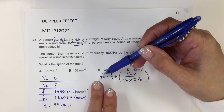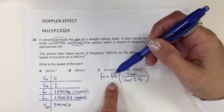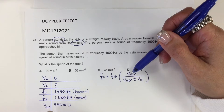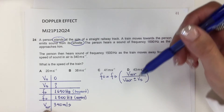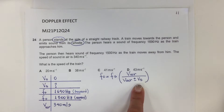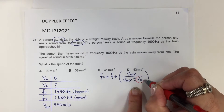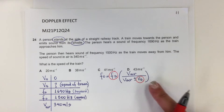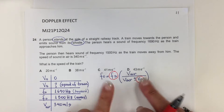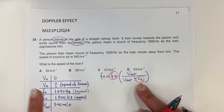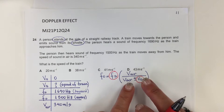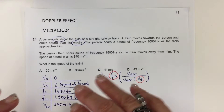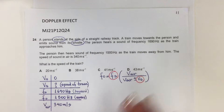I have two observer frequencies but I do not have the frequency emitted by the train. I do have the speed of sound in air, and what I need to find is the speed of the sound source. Since I don't know the source frequency, I cannot solve directly from one equation. But I can set up two equations with the information I have and see what I can do from there.